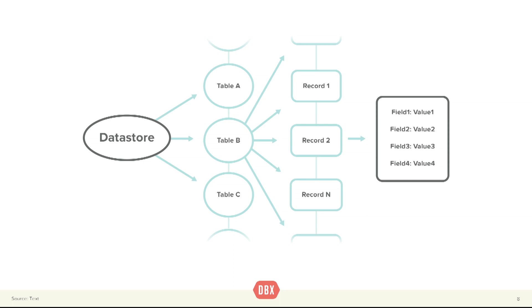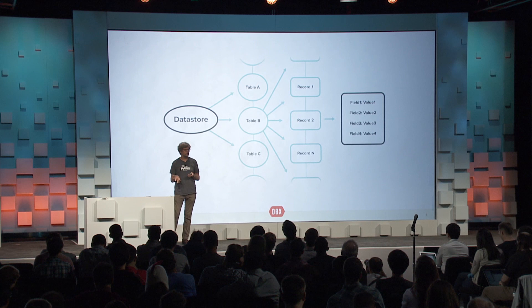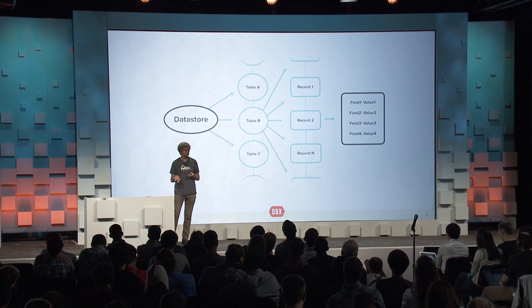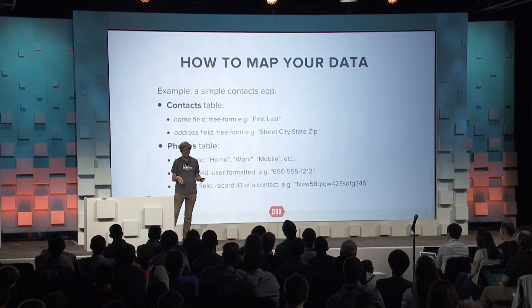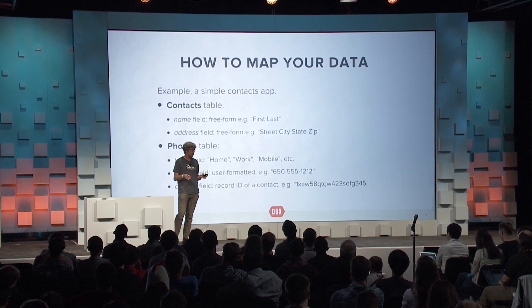Here is a very simple basic picture of a Datastore. Your data is structured in levels: tables are for the purpose of querying and identifying records, records are the unit loaded into memory and written back, and fields are the actual data you deal with. Let's say you have a contact database. You have a contacts table where every record only has two fields in this simple example: a name field and an address field. These are just free-form strings — this is like the hello world of contact applications.